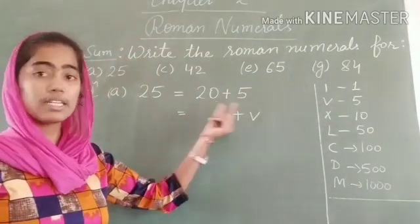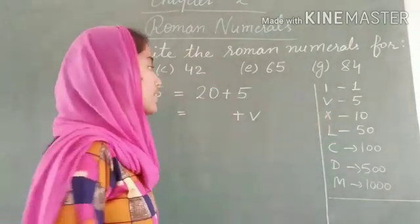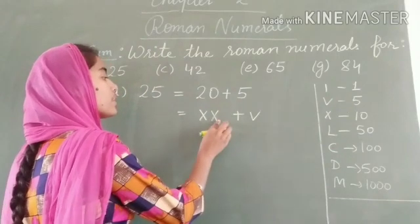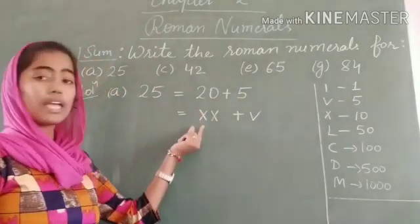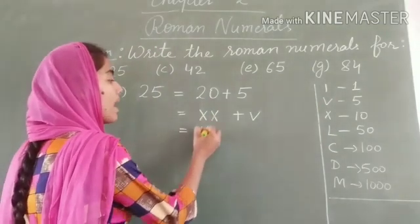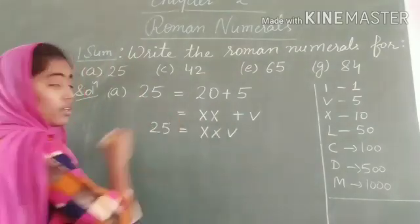For 20, I can write 20 as 10 + 10. To write 10 + 10, I will write X and X. Repetition means addition. So 20 can be written as XX. Therefore, 25 can be written as XXV.